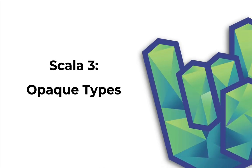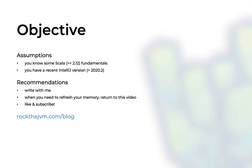Welcome back. This video continues the mini-series on Scala 3 and will cover opaque types. It assumes you know some Scala fundamentals, particularly Scala 2, since Scala 3 hasn't been released yet. You'll also need a recent IDE that supports DOTI, the code name for Scala 3. I'm using IntelliJ version 2020.2, and I'll show you how to create a Scala 3 project.